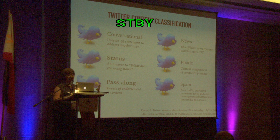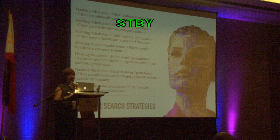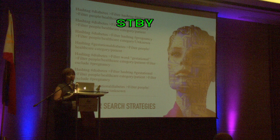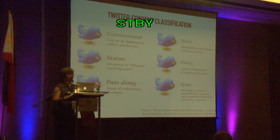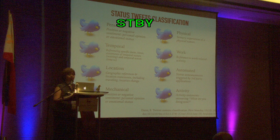If you are trying to do a Twitter content analysis, please know that there is already a Twitter content classification from Dan, which classifies tweets into the following categories: conversational, personal, temporal, mechanical, physical, work, automated, and activity. Two investigators independently mapped each status tweet we harvested to a construct of the Health Belief Model.